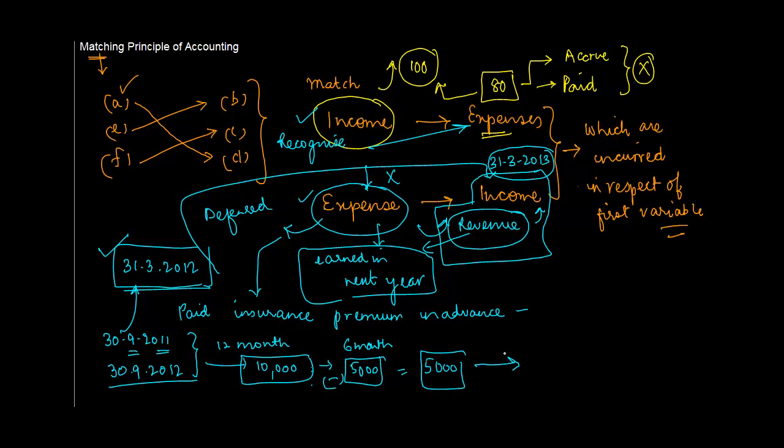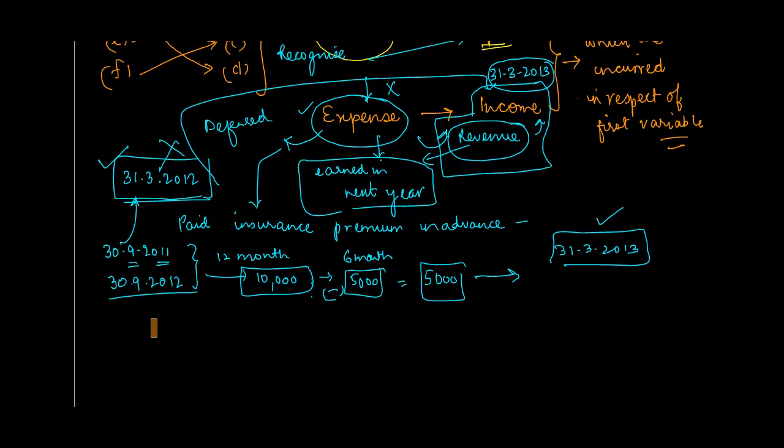In such cases, we reduce the expense actually incurred in a particular financial year from the total expense to get 5,000, and this is taken over and booked in the next financial year which is 31-3-2013. We don't book it in 2012, we book it in 2013.